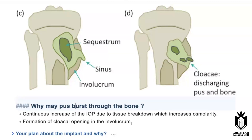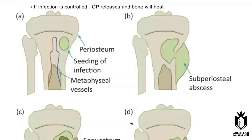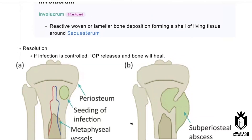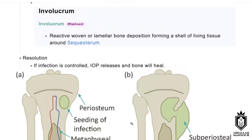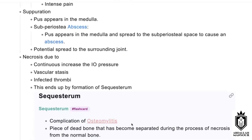The cause is due to increase in the intraosseous pressure. If this is not your first language, you need to say the right amount of words. Can you define involucrum and sequestrum? Involucrum is the new bone formation around the sequestrum, forming a living shell around it. Sequestrum is the devascularized bone formed from necrosis of the surrounding bone.